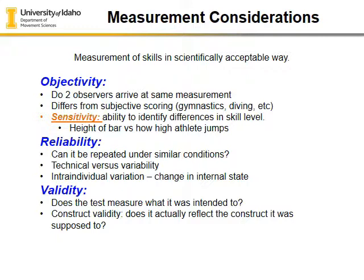Think about the gymnast or diver and the judges who hold up a scorecard — that's a very subjective measure. It would take much longer if we had to do a very objective, calculated component. And think about baseball: the debate is whether a computer should determine balls and strikes rather than a subjective umpire who can't really see what the ball's doing when it travels at 95 miles an hour. Having an objective measure means balls and strikes should be called the exact same way from umpire to umpire, day to day, first inning to ninth inning.